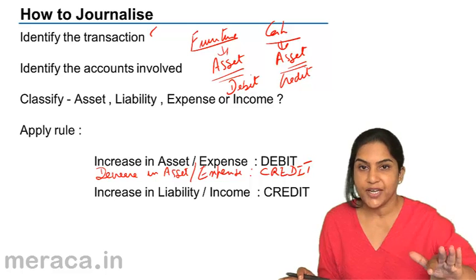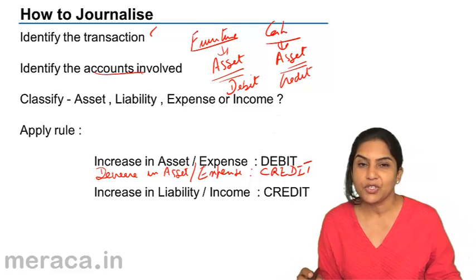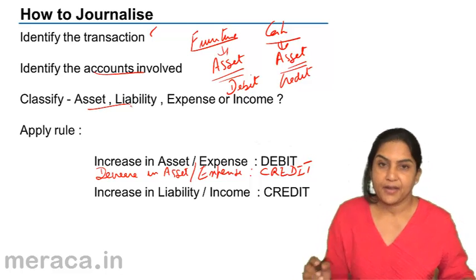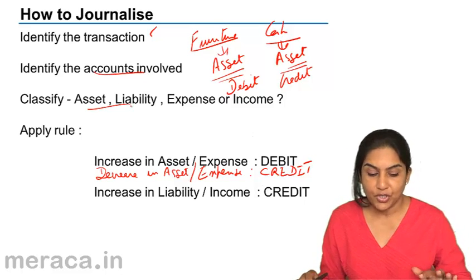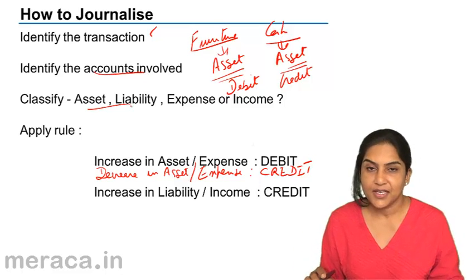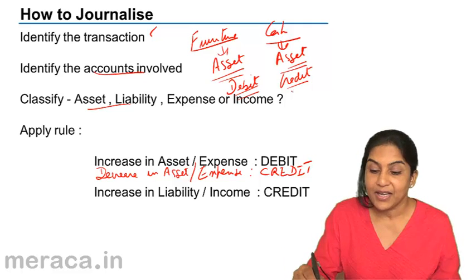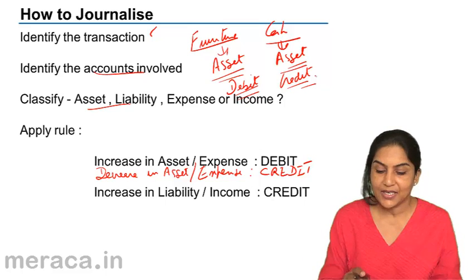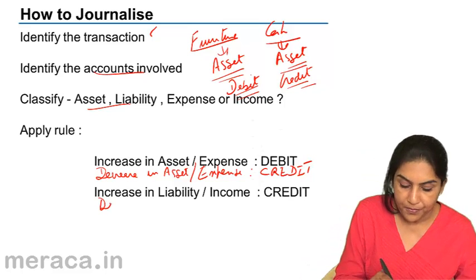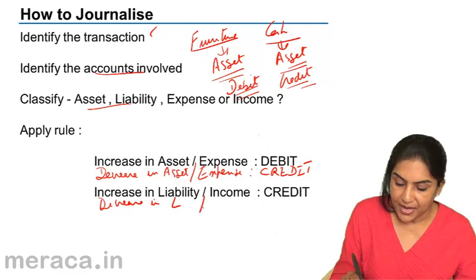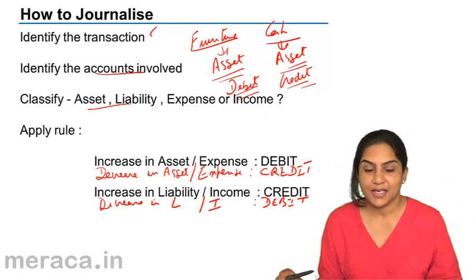So what do we do? Identify the transaction — in this example, we purchased furniture for cash. Then identify the accounts involved: furniture and cash. Then classify — furniture is an asset, cash is an asset. Then apply the rule: increase in an asset, you debit; decrease in an asset, you credit. In this case, both were assets. Furniture increased, so I debit furniture, and I credit cash because cash has gone down. So the rules are: increase in asset and expense is debit; decrease in asset and expense is credit. Increase in liability and income is credit; decrease in liability and income is debit.